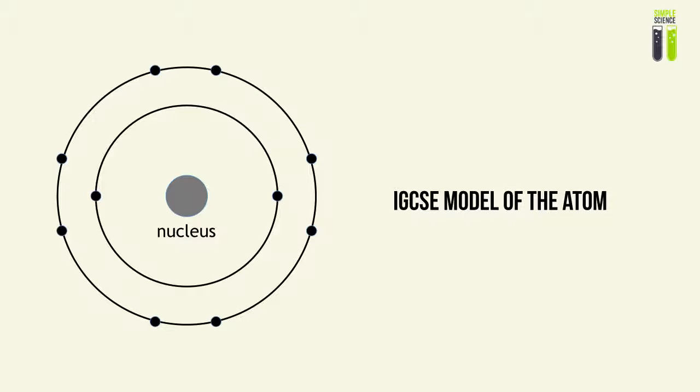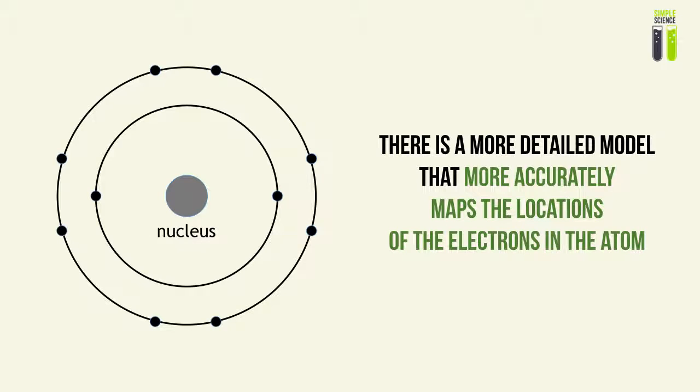If you can remember at IGCSE level, you were taught a planetary model in which electrons orbit around its central body — the nucleus. However, this model is slightly flawed, and there is simply a better model that can more accurately map the locations of the electrons around the atom. This model does not describe the path in which electrons orbit; instead, it describes the way in which electrons exist in regions around the atom, rather than paths.